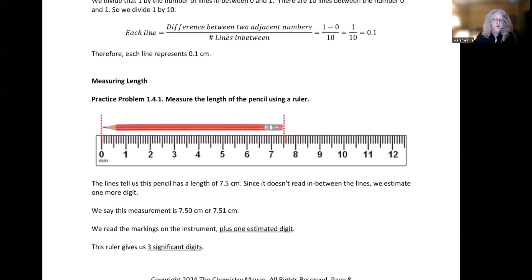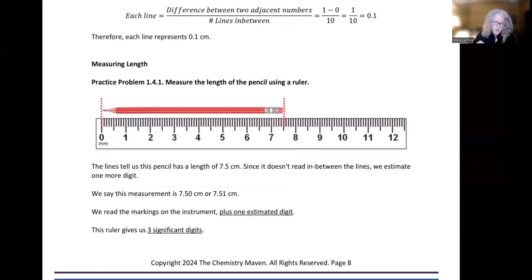When we go to read a ruler, we have to know what this ruler measures, that it actually has lines up to the tenth place, to 0.1. So I know that this pencil is about 7.5 centimeters. But what if the eraser landed halfway between 7.4 and 7.5? I wouldn't feel comfortable calling it either 7.4 or 7.5. I'd probably call it 7.45. So that's the estimated digit.